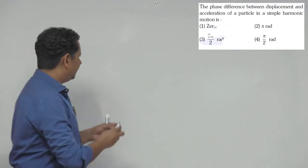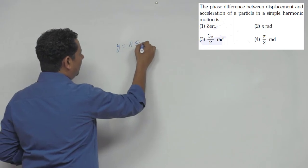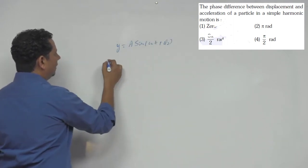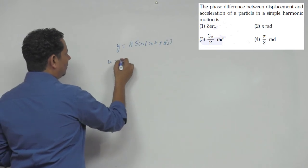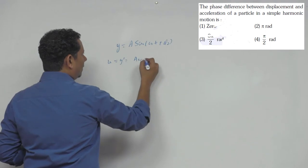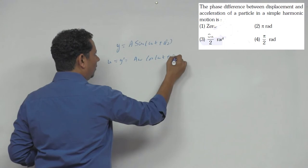Direct theory based question. So say for example displacement y = A sin(ωt + φ₀). Velocity will be equal to Aω cos(ωt + φ₀).